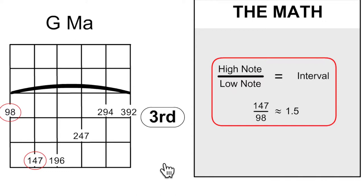G, A, B, C, D. The D note is 147 cycles per second. So dividing the higher frequency by the lower frequency, you get about 1.5.